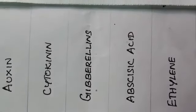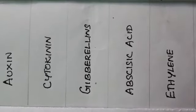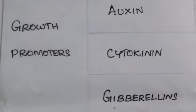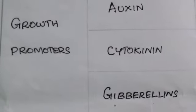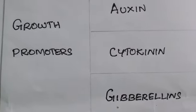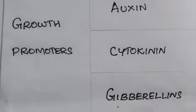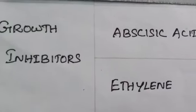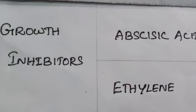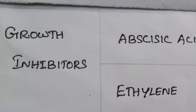There are 5 major classes of plant hormones: auxin, cytokinin, gibberellins, abscisic acid, and ethylene. Among these hormones, auxin, cytokinin, and gibberellins promote growth, while abscisic acid and ethylene inhibit growth.